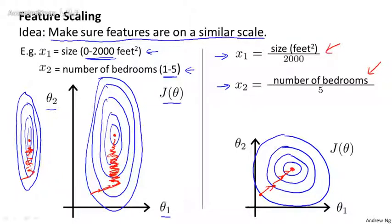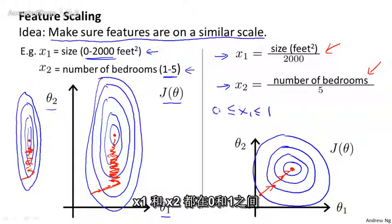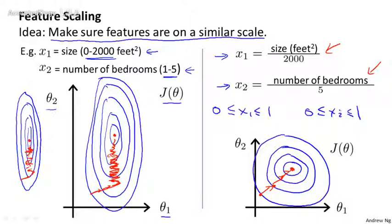So by scaling the features so that they take on similar ranges of values, in this example, we end up with both features, x1 and x2, between 0 and 1. You can wind up with an implementation of gradient descent that can converge much faster.